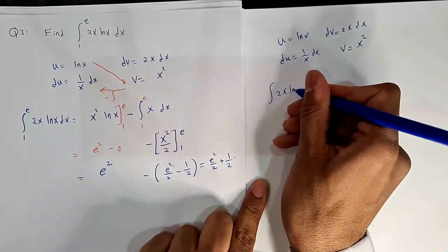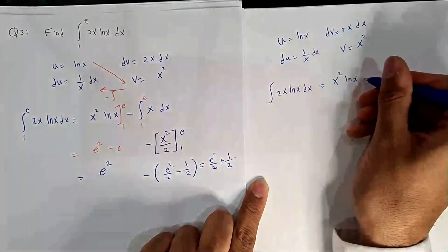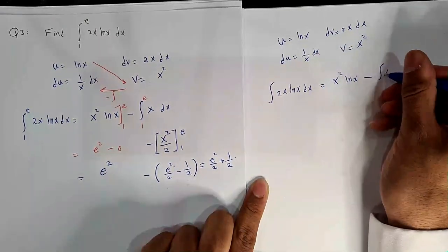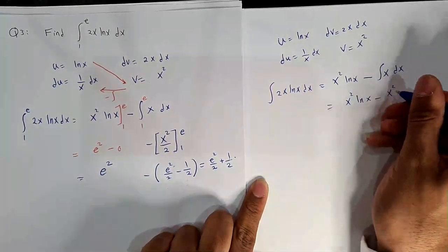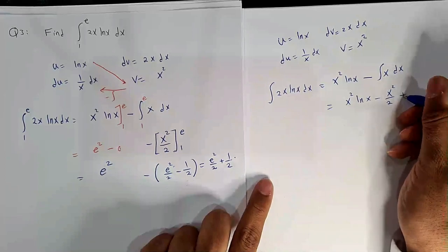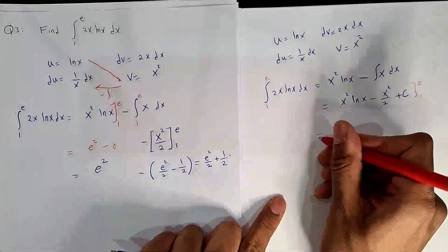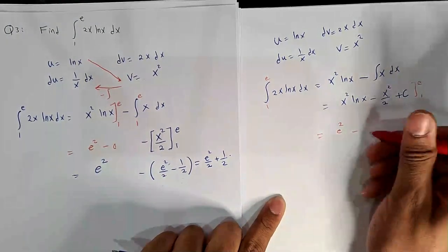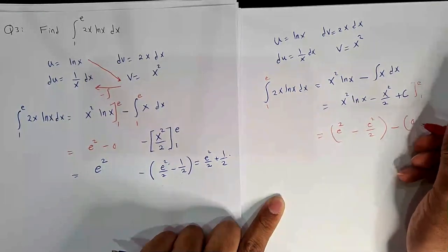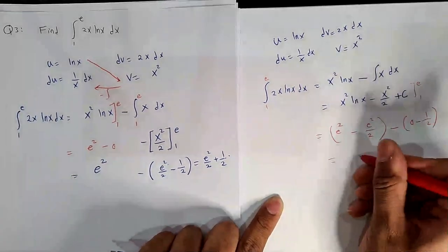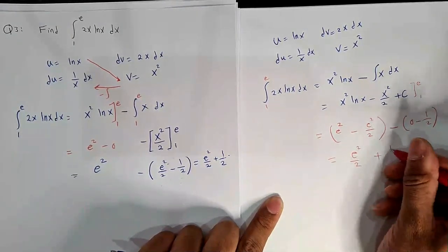Alternatively, evaluate the indefinite integral first and then apply the limits. ∫x ln(x)dx = x² ln(x) − x²/2 + C (without limits). Then evaluate from 1 to e: [x² ln(x) − x²/2]₁ᵉ = (e² − e²/2) − (0 − 1/2) = e²/2 + 1/2. Same answer.